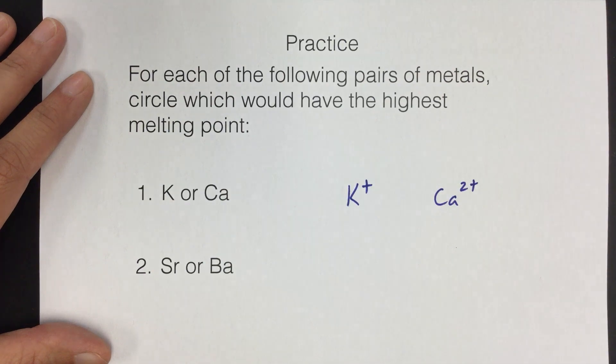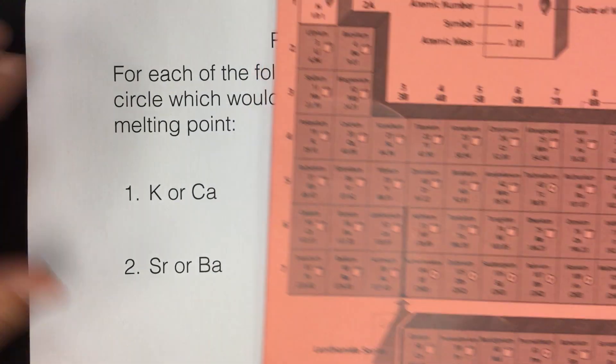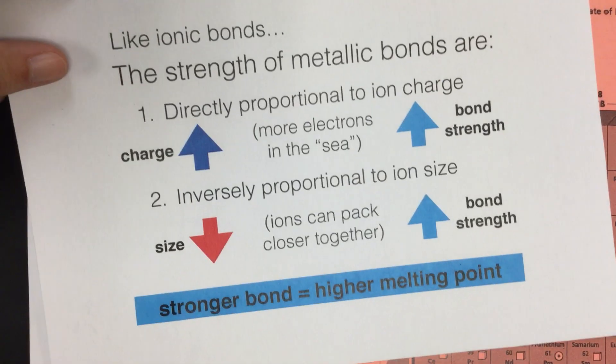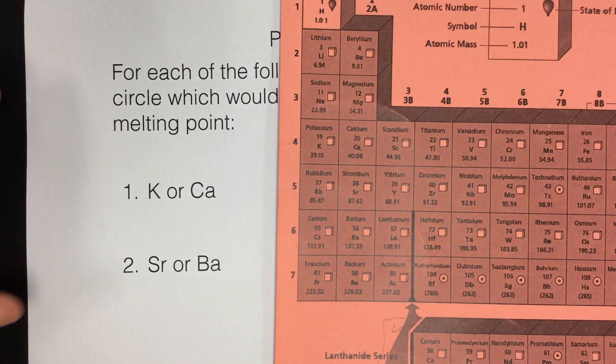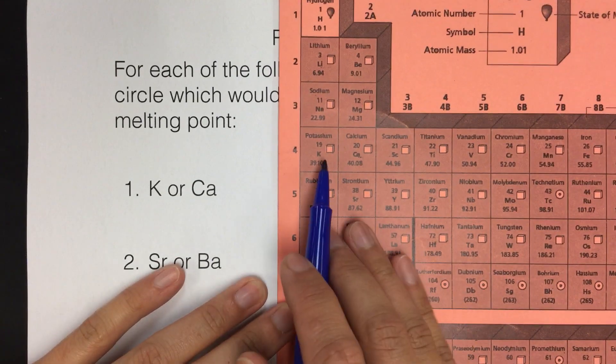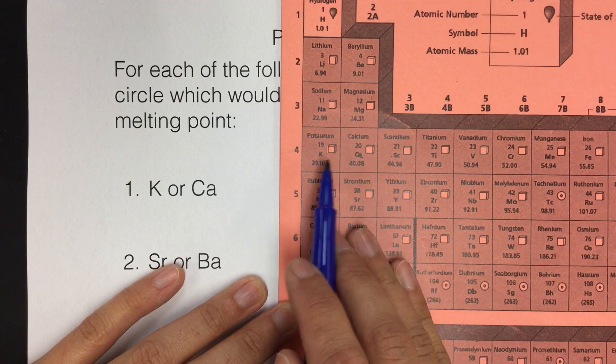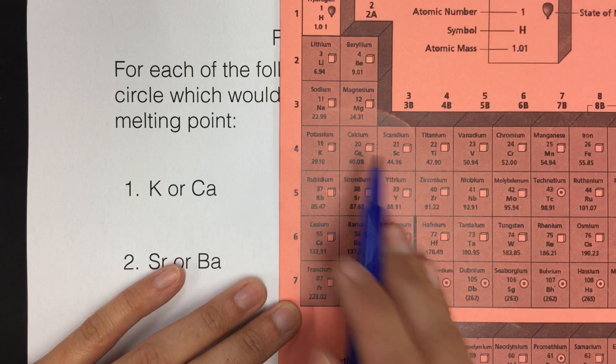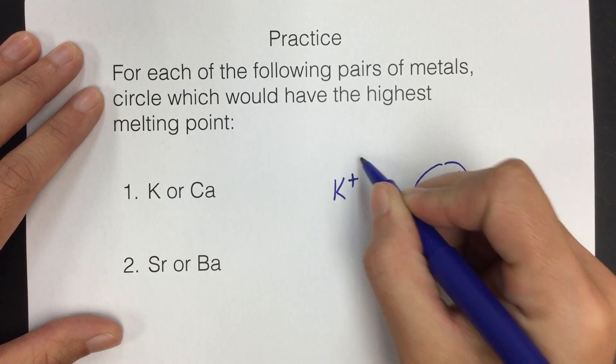The charge is already different, that's going to give me one thing to think about when I determine the bond strength. But the other thing to consider is the size. So charge and size. If we look at potassium and calcium, they're next to each other on the periodic table, so we know that the trend for atomic radius as we go across, the atoms get smaller. So calcium is going to be slightly smaller than potassium, so I'll show that in my drawing.